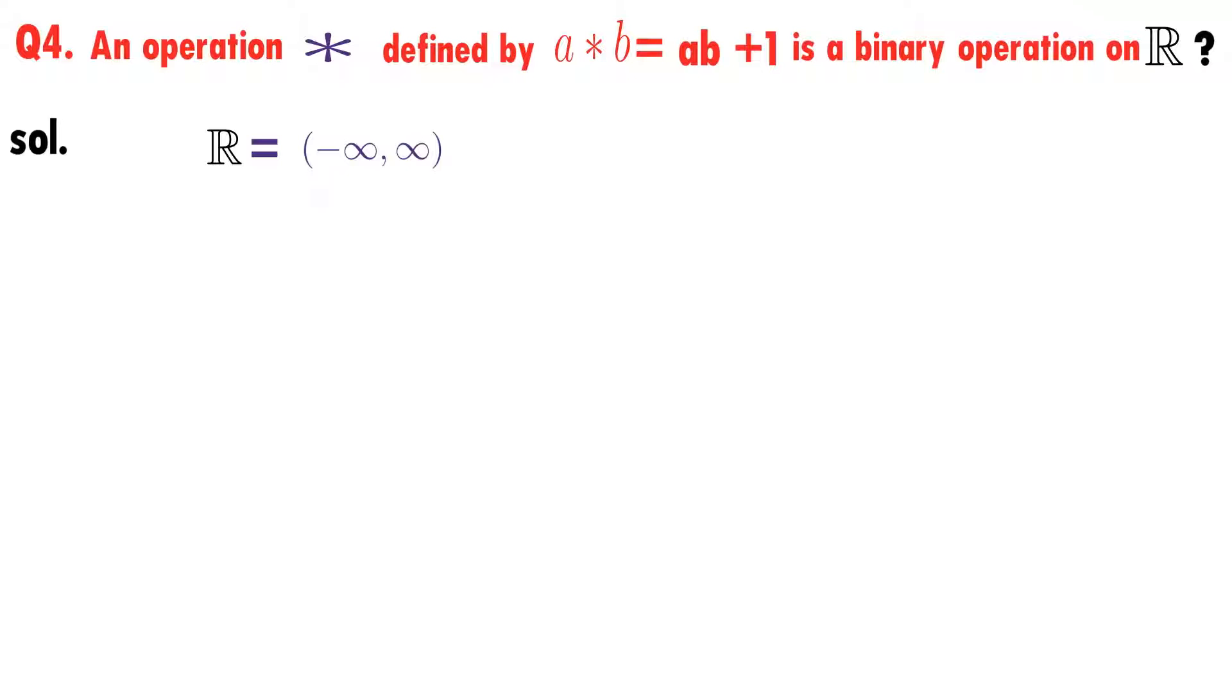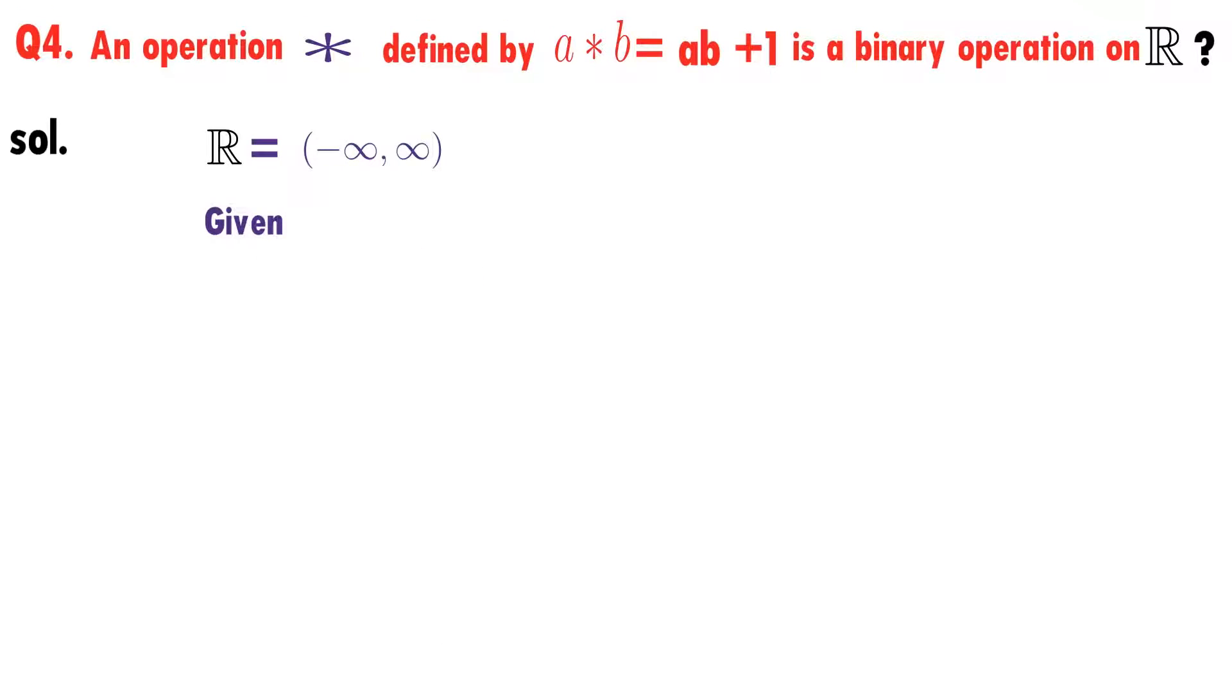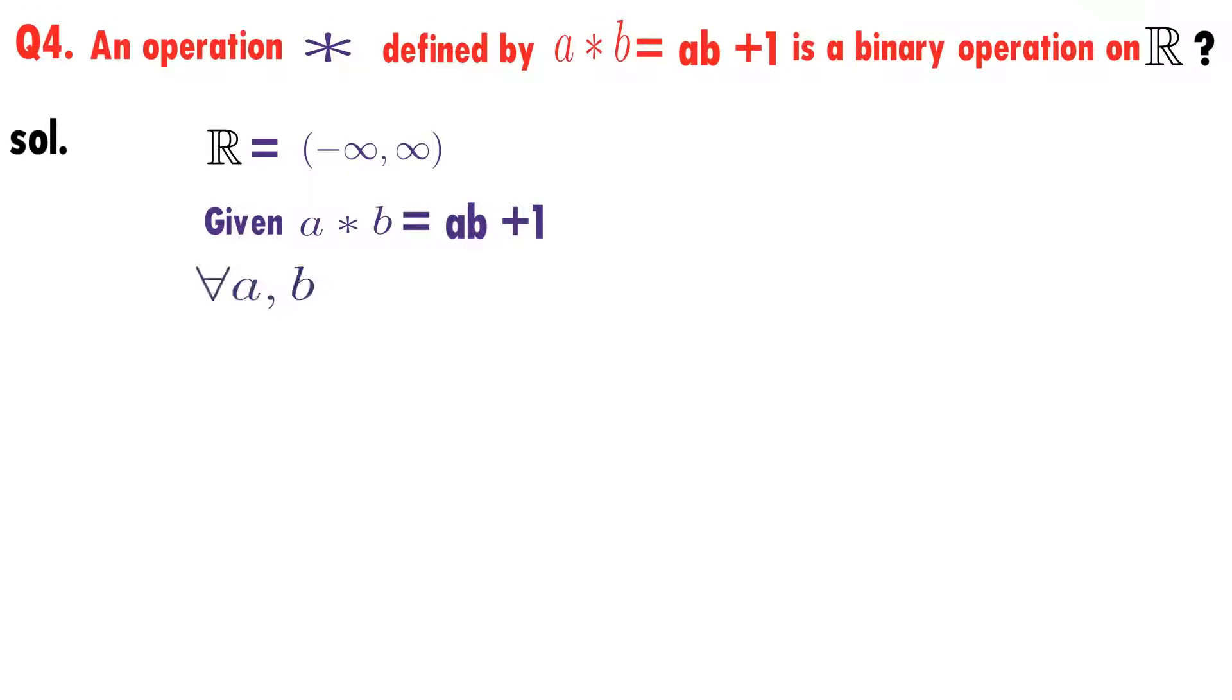What are real numbers? All the numbers between minus infinity to plus infinity are known as real numbers. Real numbers are also known as the union of integers, rational and irrational numbers.